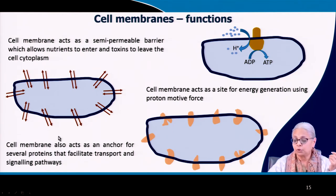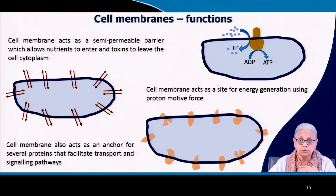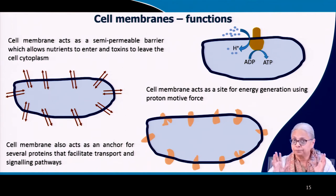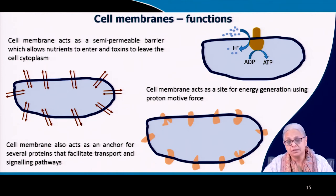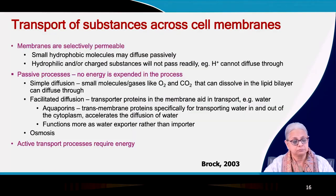The cell membrane is an anchor for several proteins that facilitate transport and signaling pathways. ATP synthase is a transmembrane protein, and there are several other proteins that determine whether water, glucose, or other substances go in and out. All these things are transported in and out of the membrane by specific proteins. For all practical considerations, the plasma membrane is either completely impermeable or at least semi-permeable — it is not a very permeable layer.